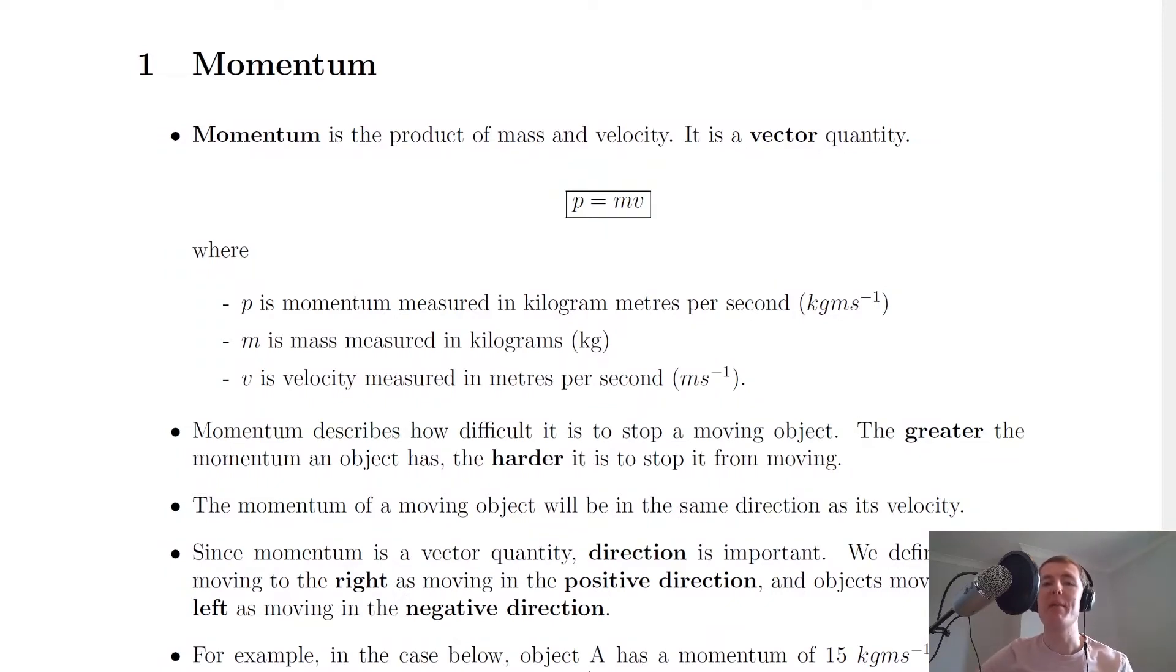The first thing to look at is the definition of momentum, and it says here that momentum is the product of mass and velocity. So if an object has a mass and it's moving with some velocity, then we say it's got a momentum. Momentum is a vector quantity, which means it will have a magnitude and a direction, and here's the equation for it.